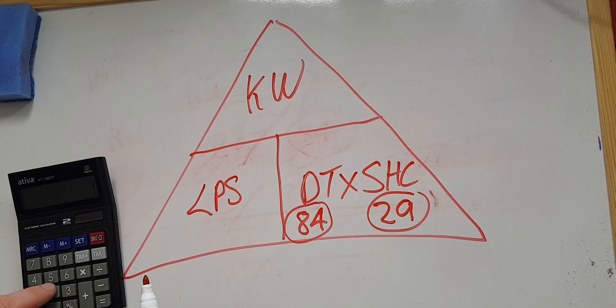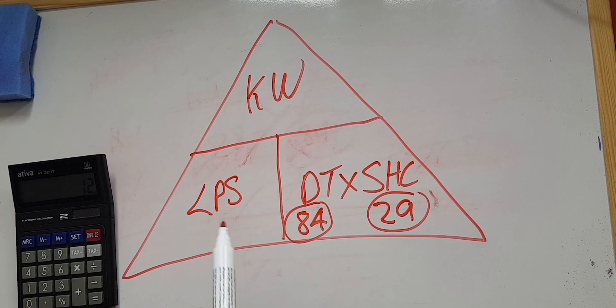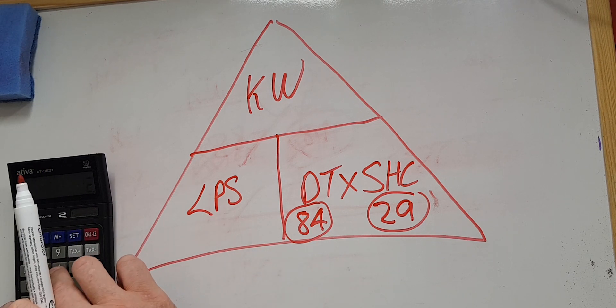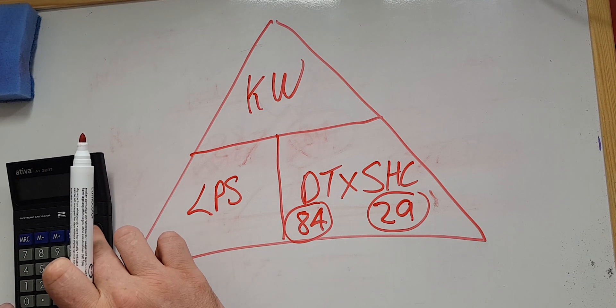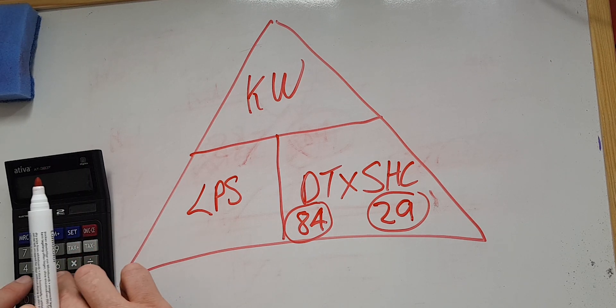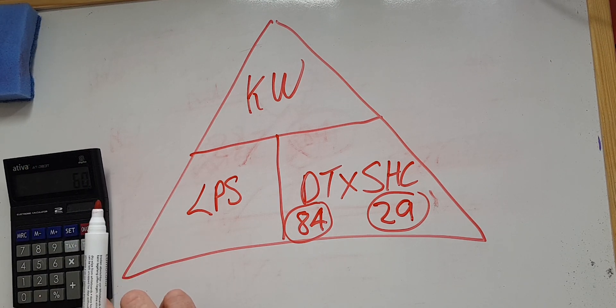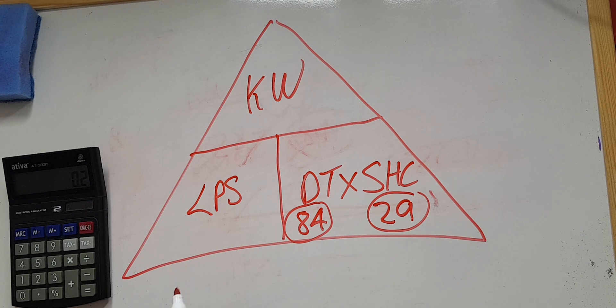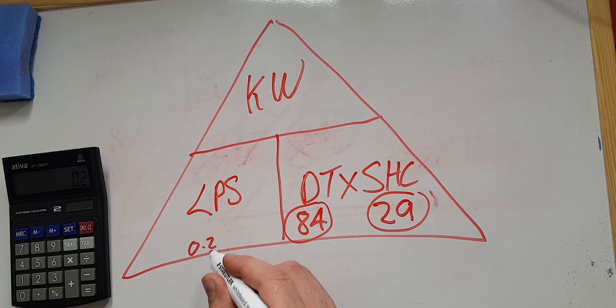For example, we can work out the amount of kilowatts required for a combination boiler. So let's say you needed 12 liters a minute for hot water production. We'd have to put that into liters per second — so divided by 60. 12 divided by 60 is 0.2. So we've got 0.2 liters per second.